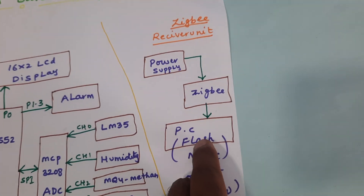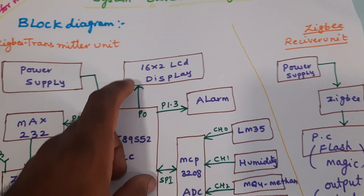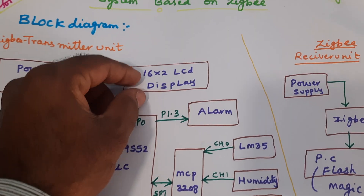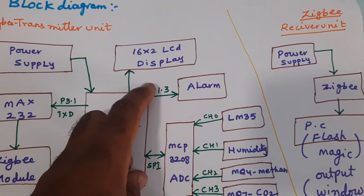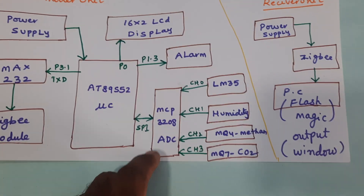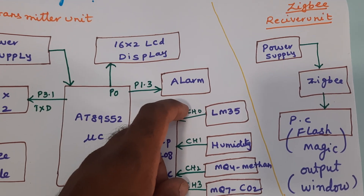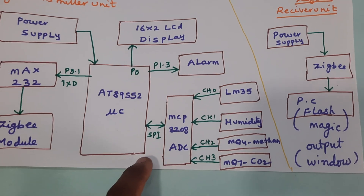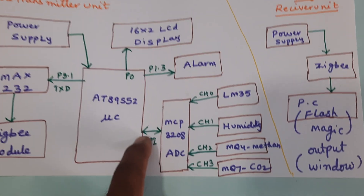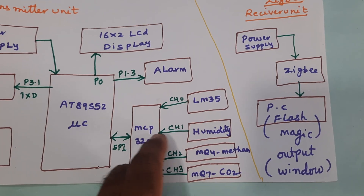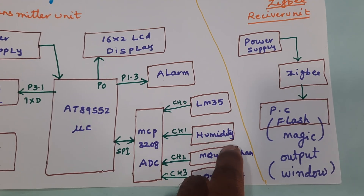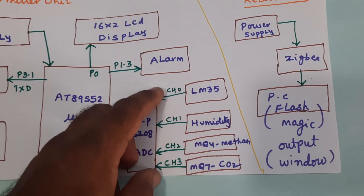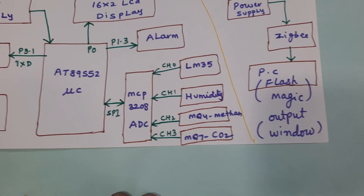The receiver is connected to the Flash Magic circuit and port 0. It is connected to a 16x2 LCD character display — whatever process is going on will be displayed on the LCD. The alarm is connected to port 1.3. We are using four sensors total: LM35 temperature sensor on channel 0, humidity sensor on channel 1, MQ4 methane gas sensor on channel 2, and MQ7 CO sensor on channel 3, using the MCP3208 ADC with SPI protocol connected to port 2.